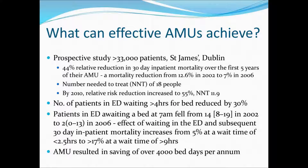So what can effective AMUs actually achieve? There's quite a lot of data out there. Bernard Silk's data from Dublin — a prospective study of over 33,000 patients — showed a 44% relative reduction in inpatient mortality over the first five years of their AMU opening, giving a numbers needed to treat of 18, later dropping to 11.9. They also saw the number of patients in ED waiting more than four hours for a bed reduce by nearly a third. This is important because 30-day inpatient mortality increases from 5% if waiting less than two and a half hours to more than 17% if waiting greater than nine hours. Bernard Silk estimated his AMU saved over 4,000 bed days per year.